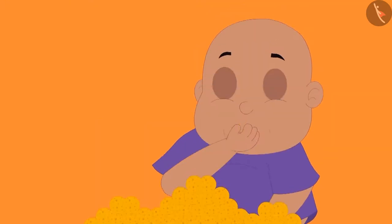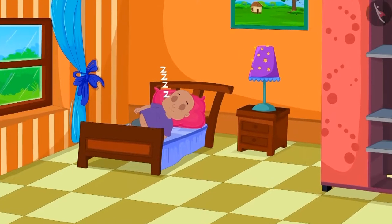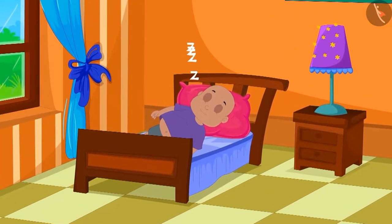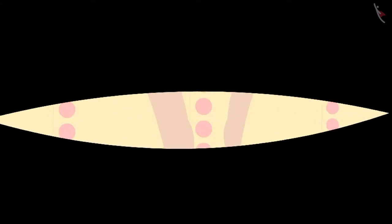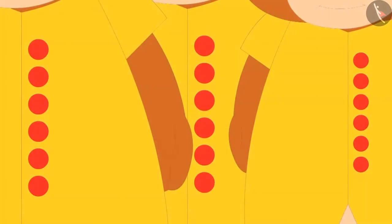Babalu ate a lot of laddos and started feeling sleepy. Babalu slept on the bed. Suddenly Babalu heard some voices. When Babalu tried to see in his half-asleep state, everything looked hazy to him, and he could only see 18 buttons.